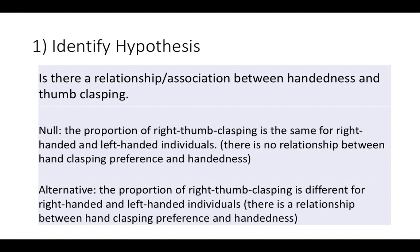The alternative hypothesis is that there is a relationship between hand clasping preference and handedness. We haven't necessarily stated what that is — whether right-handed individuals prefer the left thumb on top or the right thumb on top. All we're asking is: is there an association between handedness and thumb preference?